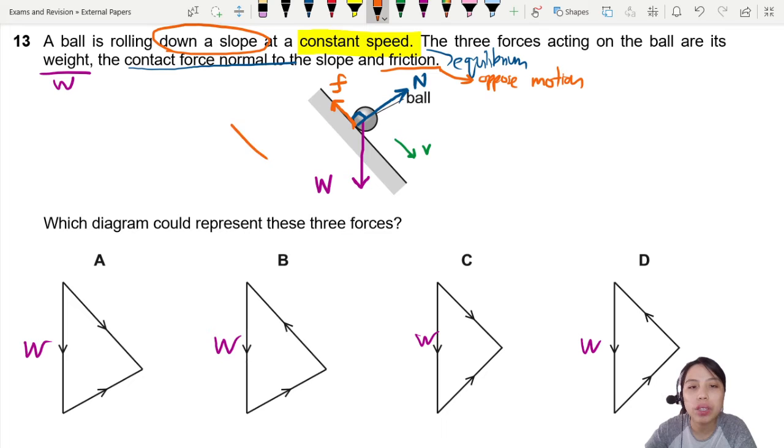Friction pointing to the top left in that direction. This one is wrong already, wrong direction. This one could be friction. This is wrong direction. This one can be friction. So we cancel out A and C.